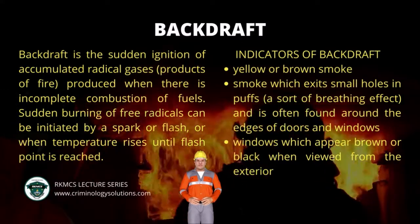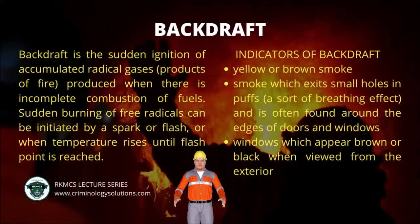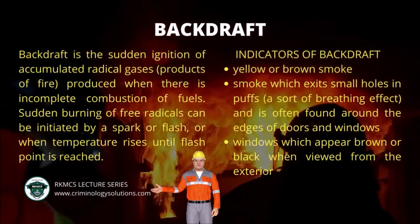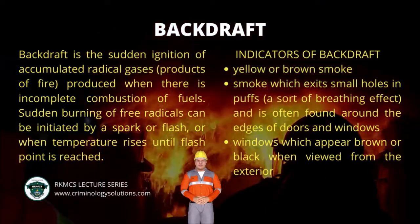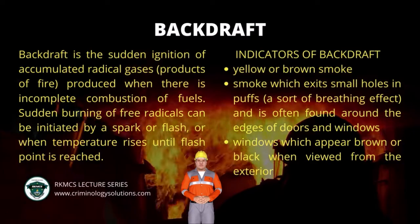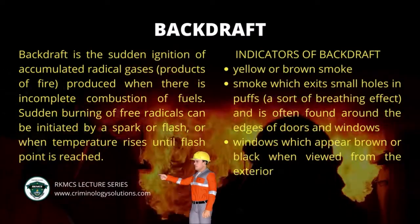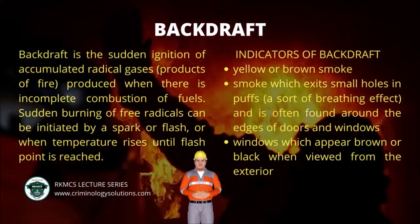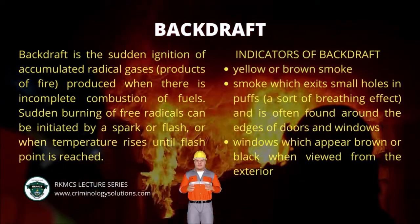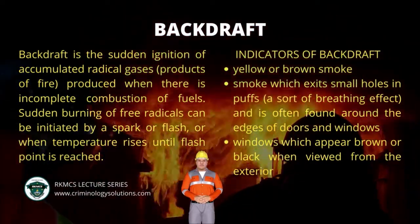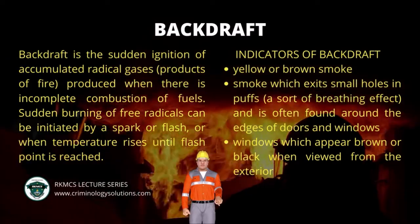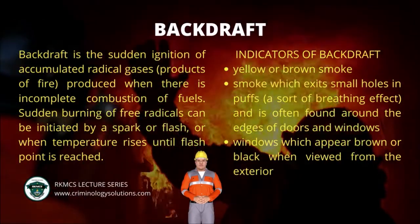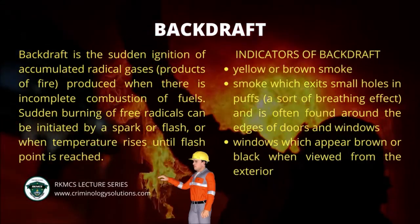Characteristic warning signs of a backdraft include yellow or brown smoke, smoke which exits small holes in puffs and is often found around the edges of doors and windows, and windows which appear brown or black when viewed from the exterior. These darker colors are caused by the presence of large amounts of particulate matter suspended in the air inside the room due to incomplete combustion, indicating that the room lacks enough oxygen to permit oxidation of the soot particles. Firefighters also look for soot on the inside of windows and in any cracks caused by heat. The windows may also have a slight vibration due to varying pressure within the compartment due to intermittent combustion.